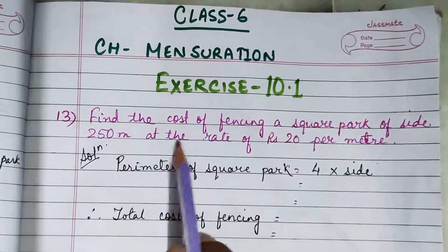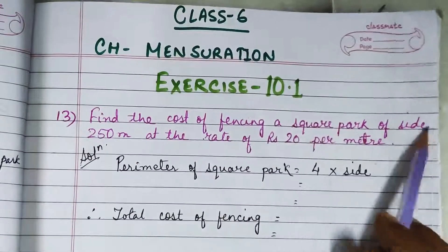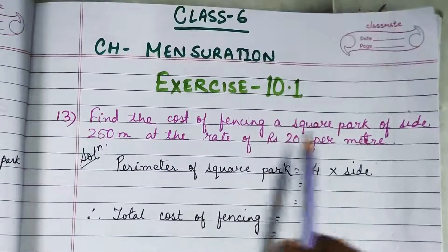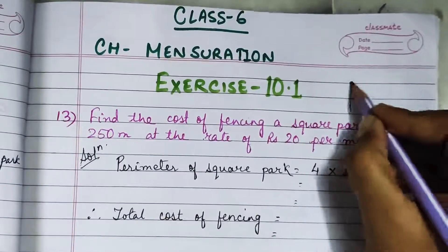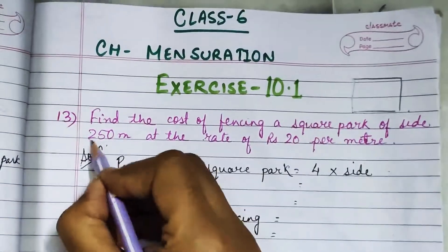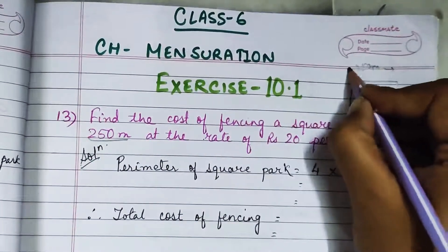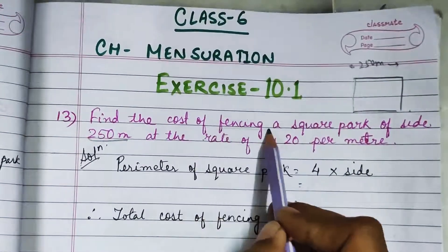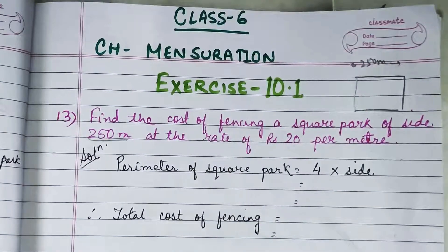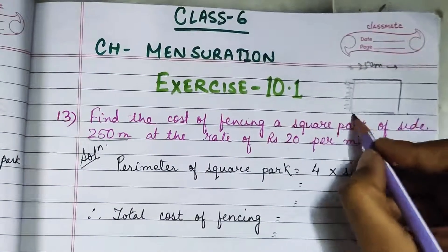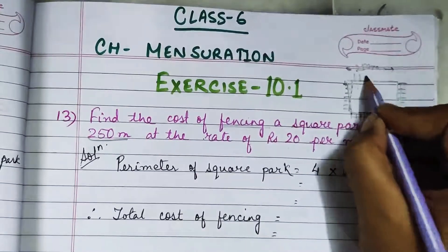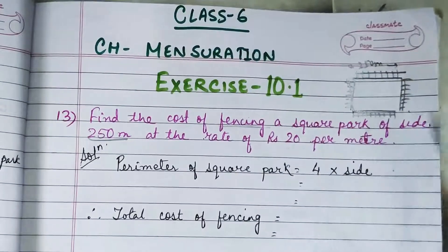Question 13 says: find the cost of fencing a square park of side 250 meters at the rate of rupees 20 per meter. So in this question we have a square park of side 250 meters, and we have to find the cost of fencing — that is, the wooden boundary wall made on all four sides of this park.